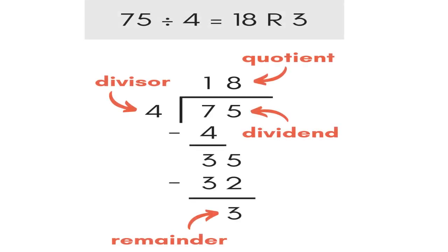If we do long division, 75 divided by 4, the answer is 18, remainder 3. Let's talk about this: 4 is called the divisor, 18 will be the quotient or the answer, and 75 is the dividend, the number in which you must divide.